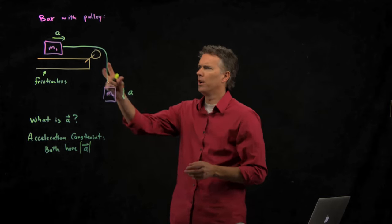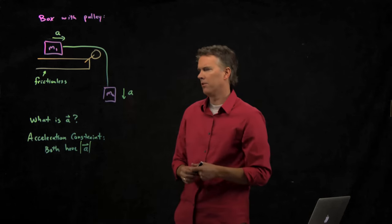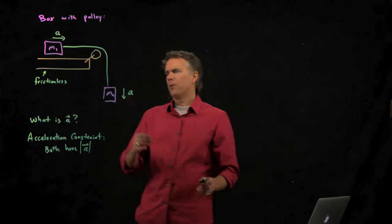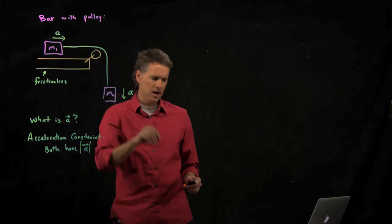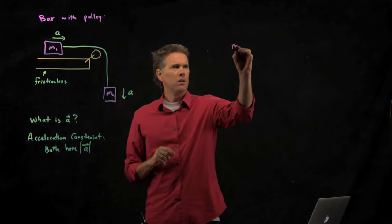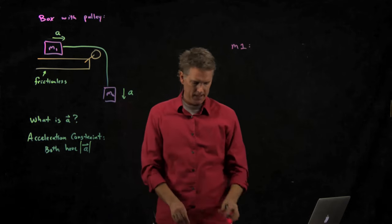If M1 accelerates to the right, that rope tells us that M2 is going to accelerate down with the same acceleration A. So now what do I do? I've got my block M1, I've got my block M2. Nice looking picture. I now have to draw a free body diagram.